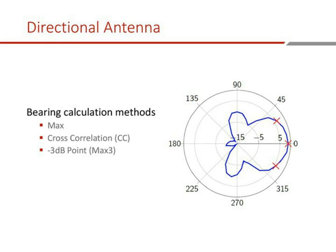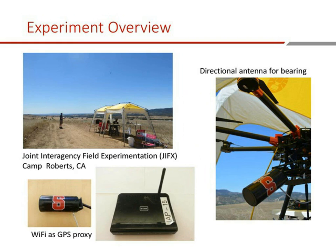We did experiments at the Joint Interagency Field Experimentation event, JIFX, at Camp Roberts in California. We brought out JAEGER with our directional antenna. Since we can't jam GPS whenever we want, we did all our experiments with Wi-Fi as a proxy for GPS. The methodology of localizing the signal is the same whether it's a Wi-Fi router or a GPS jammer — things that change slightly are the exact characterization of the patterns, but much of what I'll discuss is still valid with GPS.